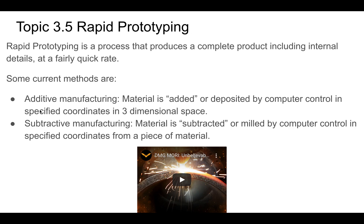You're looking at your XYZ coordinates in some piece of three-dimensional space - this could be like the printer bed, or you'll see lots of different ways. But you're adding material. Subtractive is basically you're taking away material, or milling it - the technical word for that is milling. This is also by computer control at specified coordinates in three-dimensional space, and you're taking material away. This can be lots of different things - anything from stone to wood to metal.